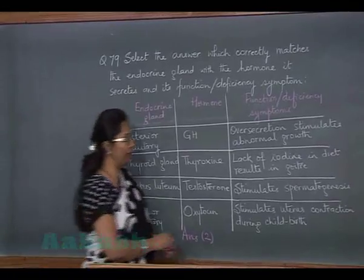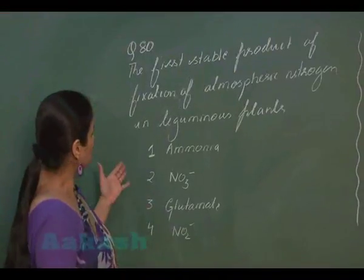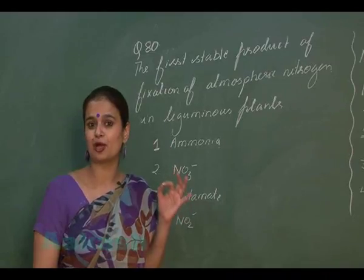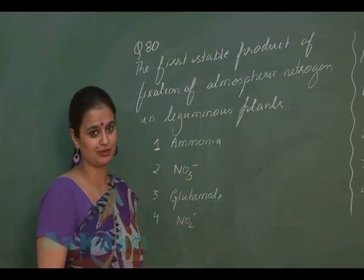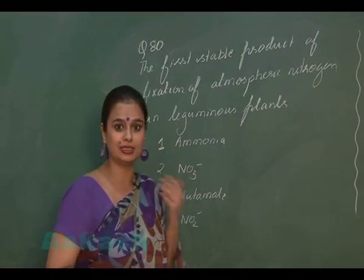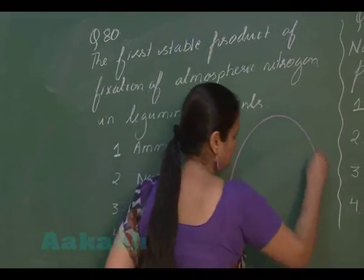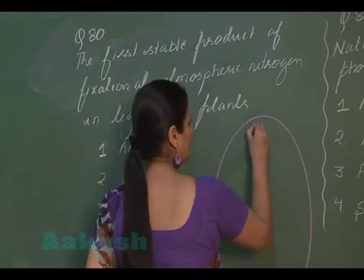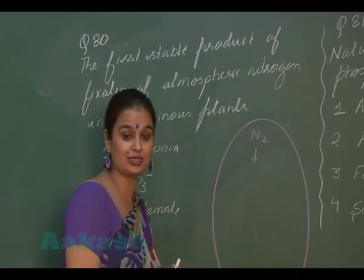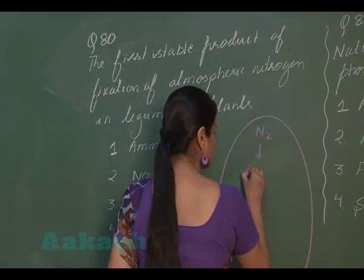In question number 80, we have to find the first stable product of nitrogen fixation in a leguminous plant. During nitrogen fixation, reduction occurs — there is addition of electrons and addition of hydrogen ions. Due to this reduction, nitrogen is converted into diamine.